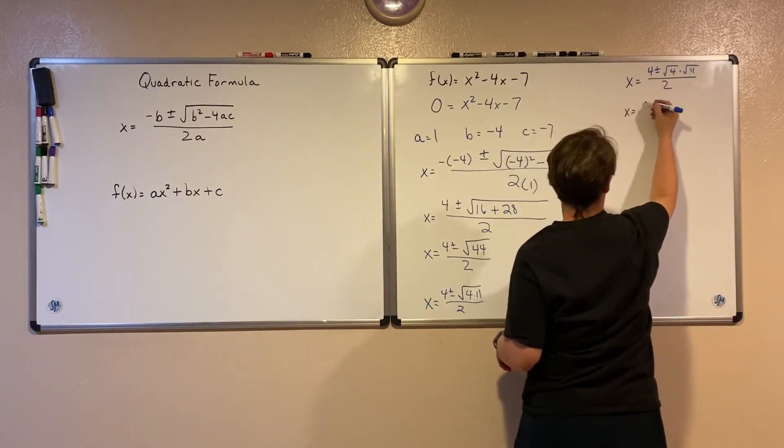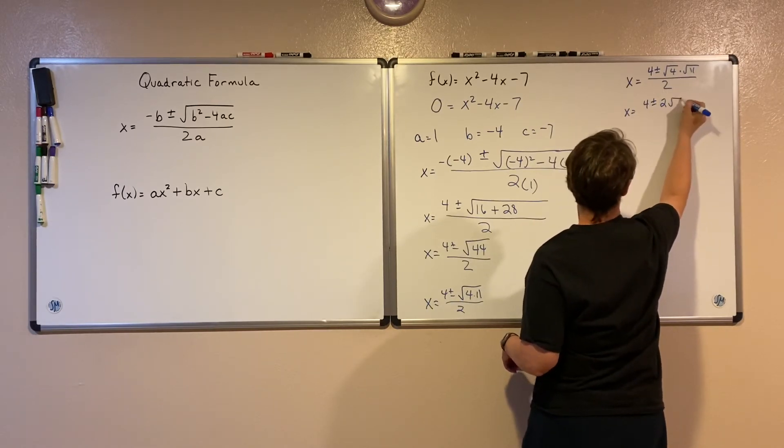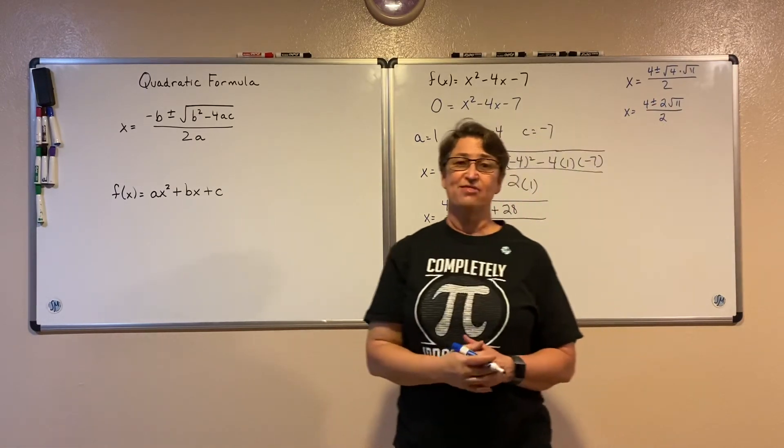X equals, still leave this alone for now. This, the square root of 4 is 2. The square root of 11 is just not a pretty number. We're going to leave that there, but I've simplified that radical.